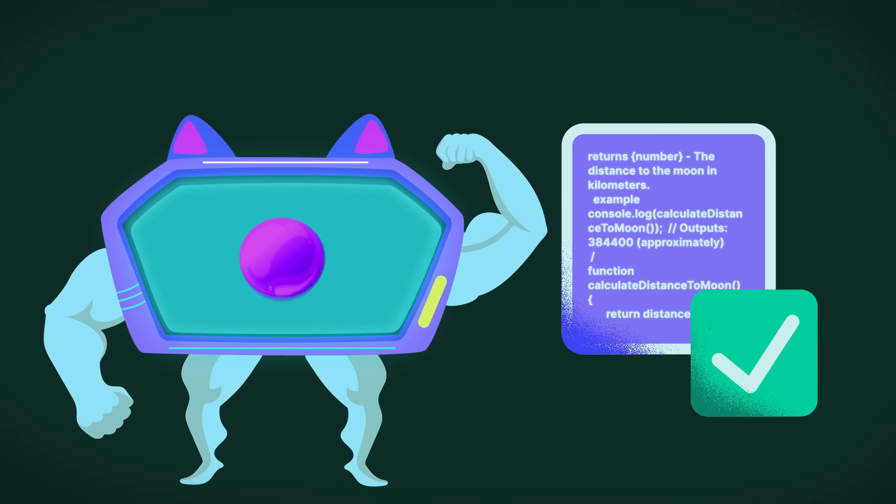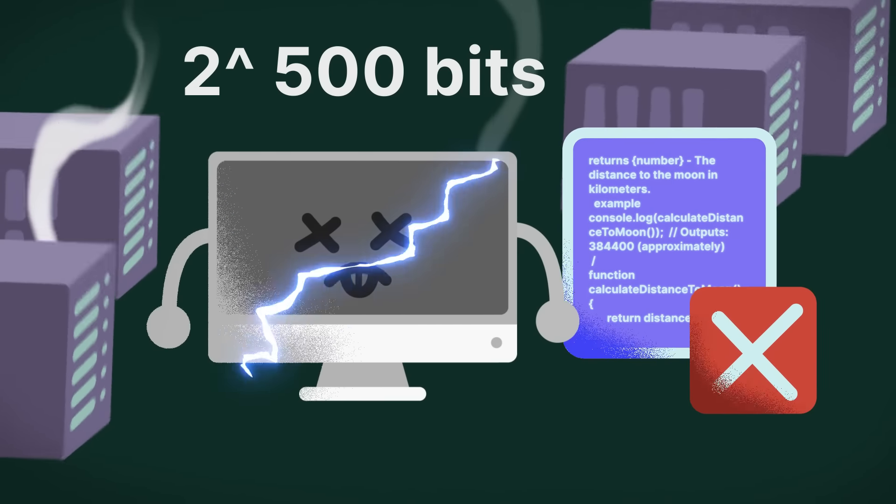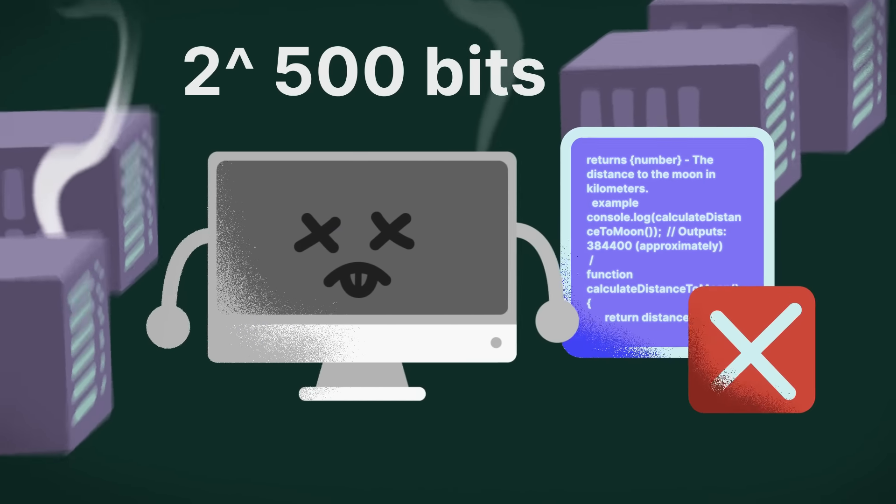For example, a computation that's easily completed by a system with 500 qubits might be impossible with even an incredibly large 2 to the power of 500 classical bits.